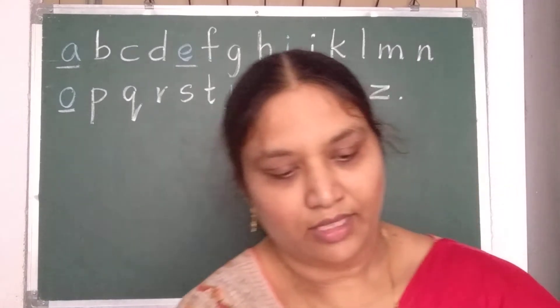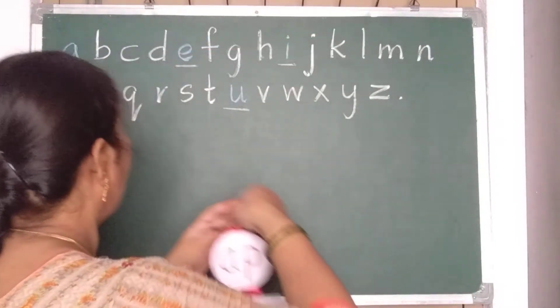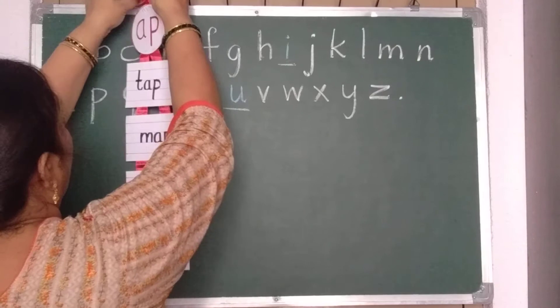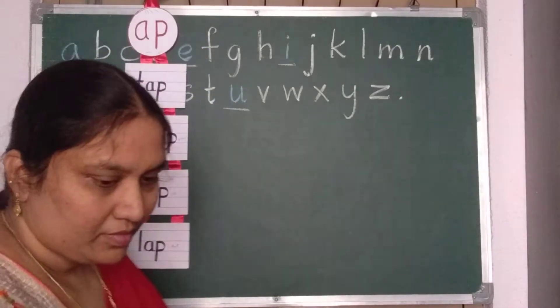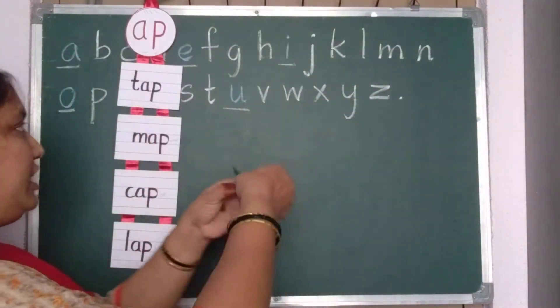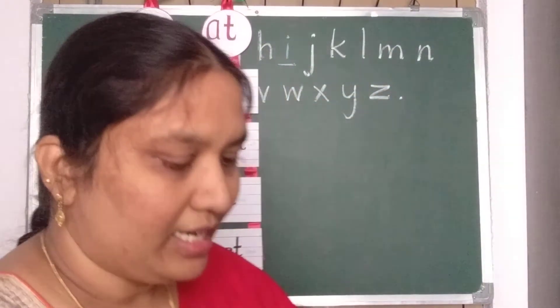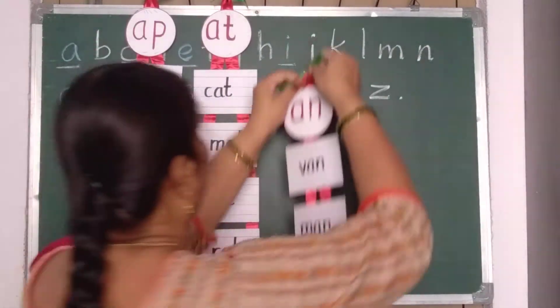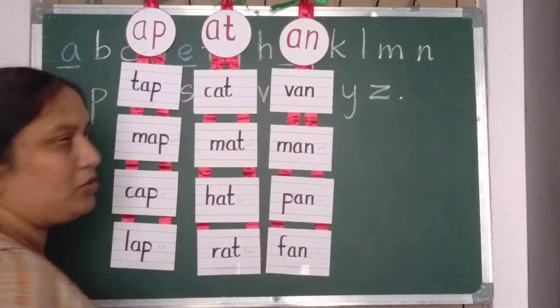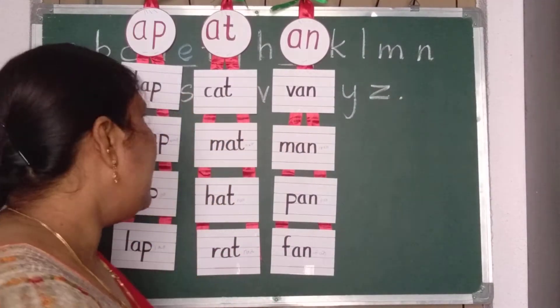Now, we will learn A sound words today. A, E, A, T. And A, N. These, I think, you know, you have learned already in LKG. Again, we will recollect it.